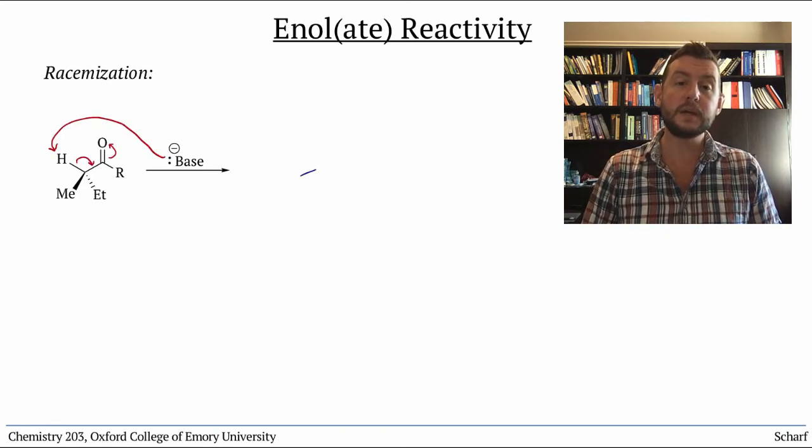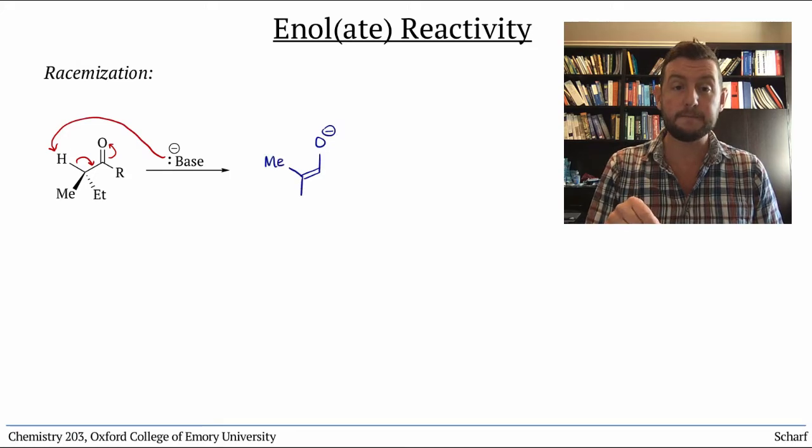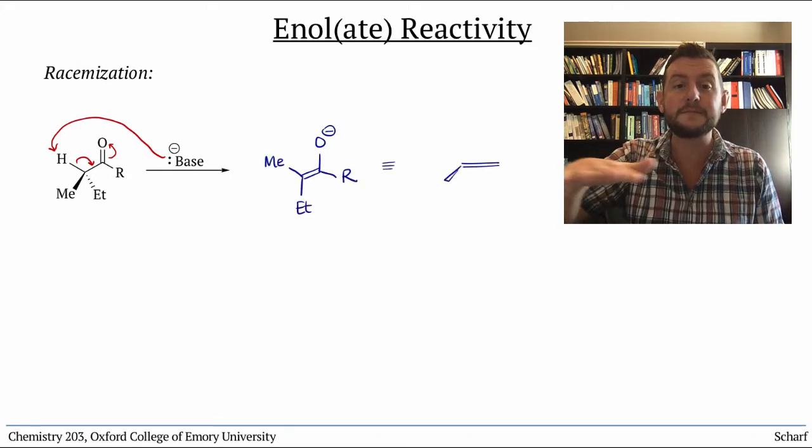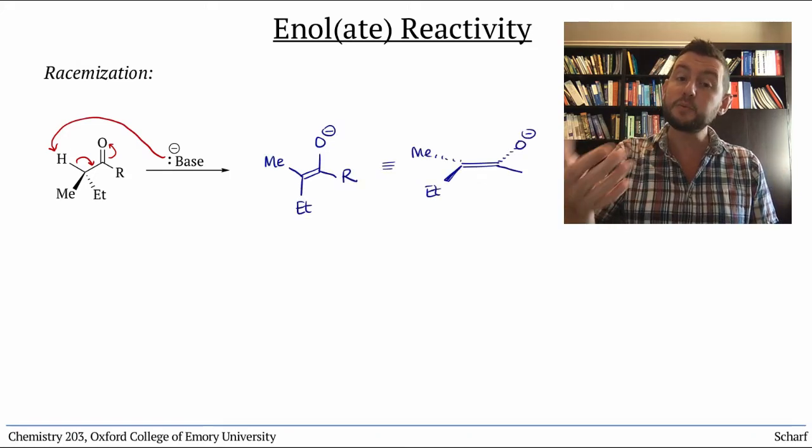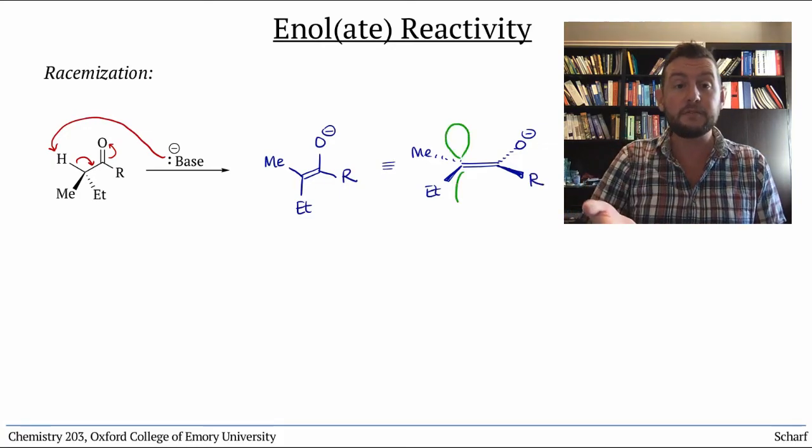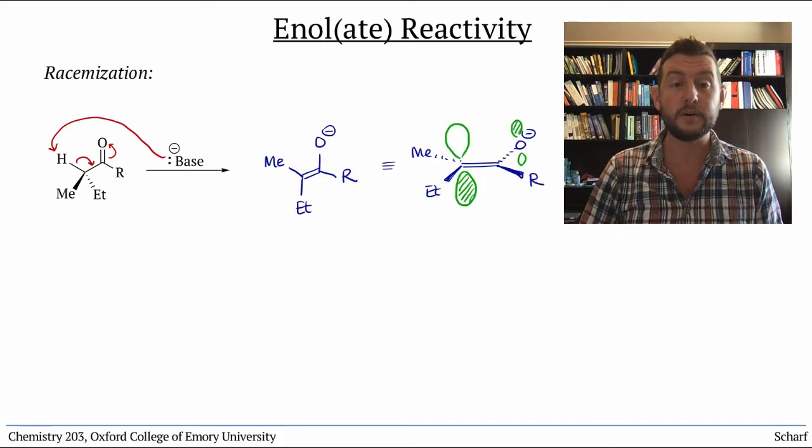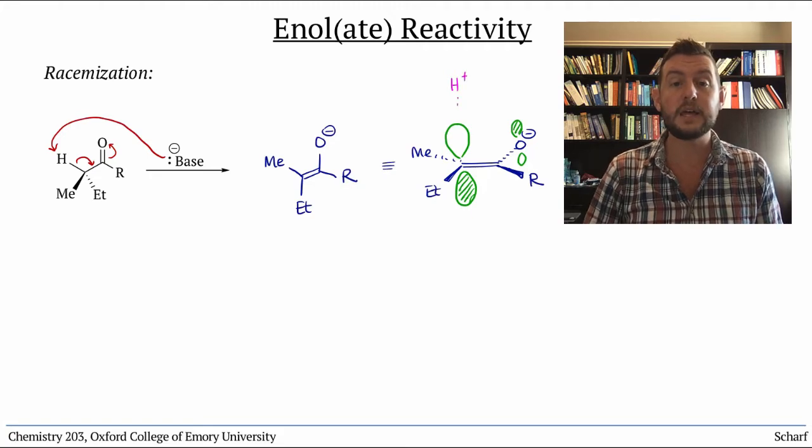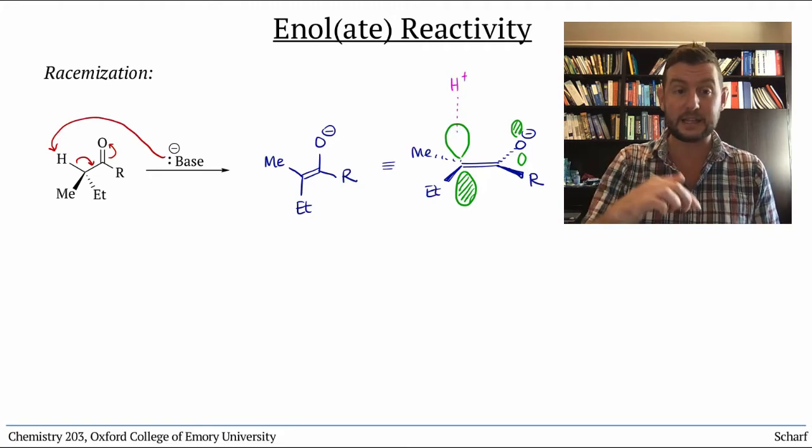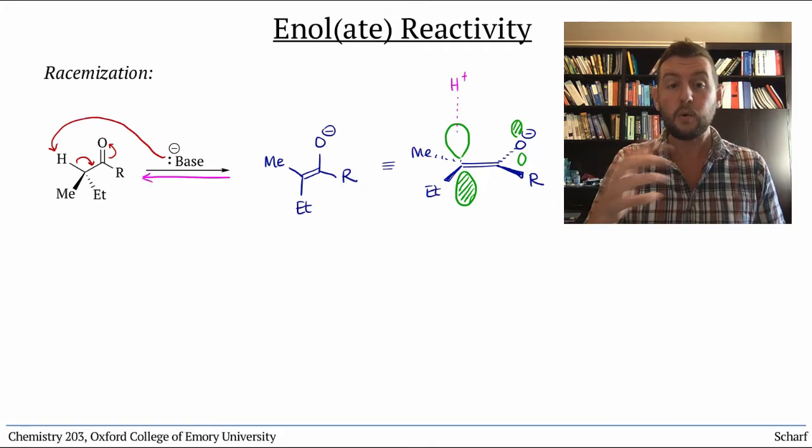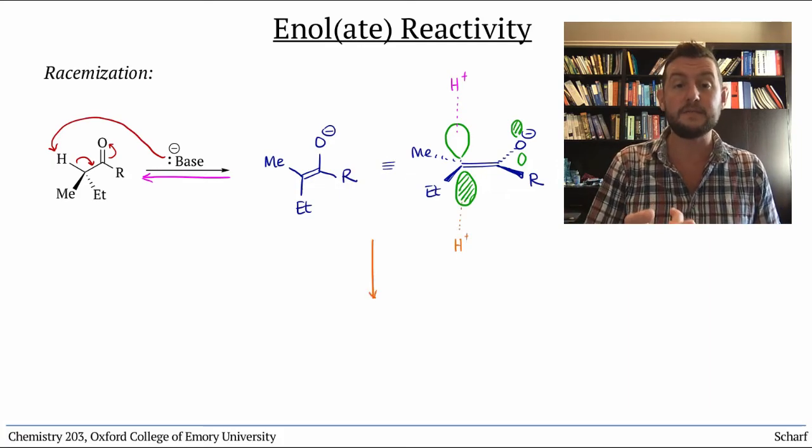This occurs because when we deprotonate the alpha carbon, the resulting enolate is flat, and reprotonation can be done from either face of the HOMO. There's a 50-50 chance that we put the H back exactly where we took it from, or that we put it back on the other face of the enolate.